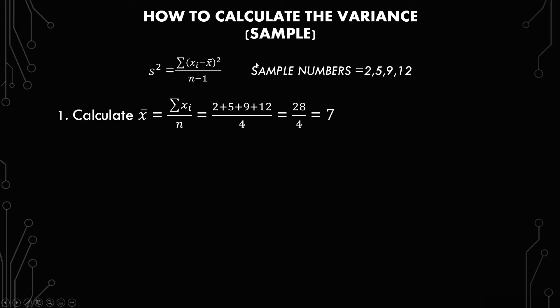The first thing you have to do is calculate x bar, or the mean. So it's the summation of each x over n, which equals 2 plus 5 plus 9 plus 12 over 4, which gives you 28 over 4, which gives you 7.